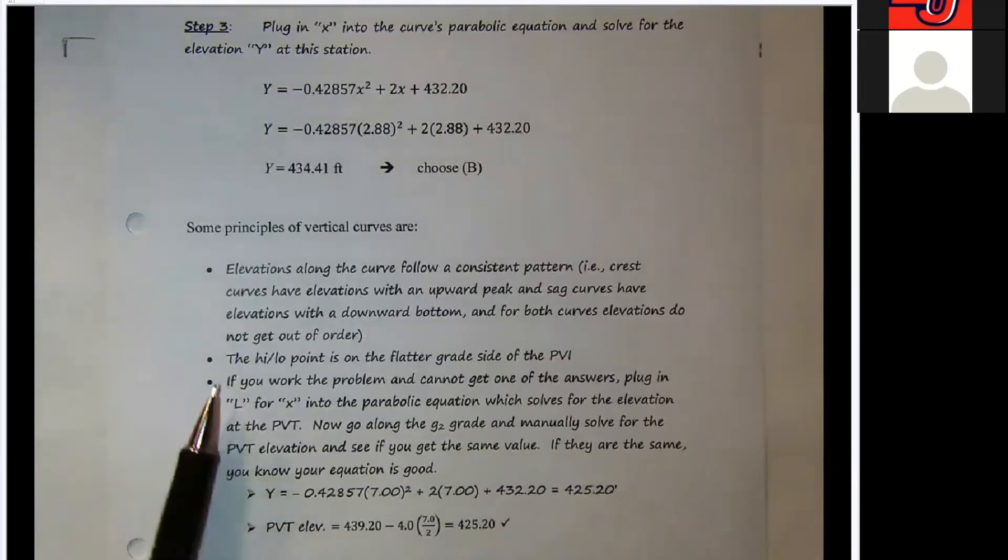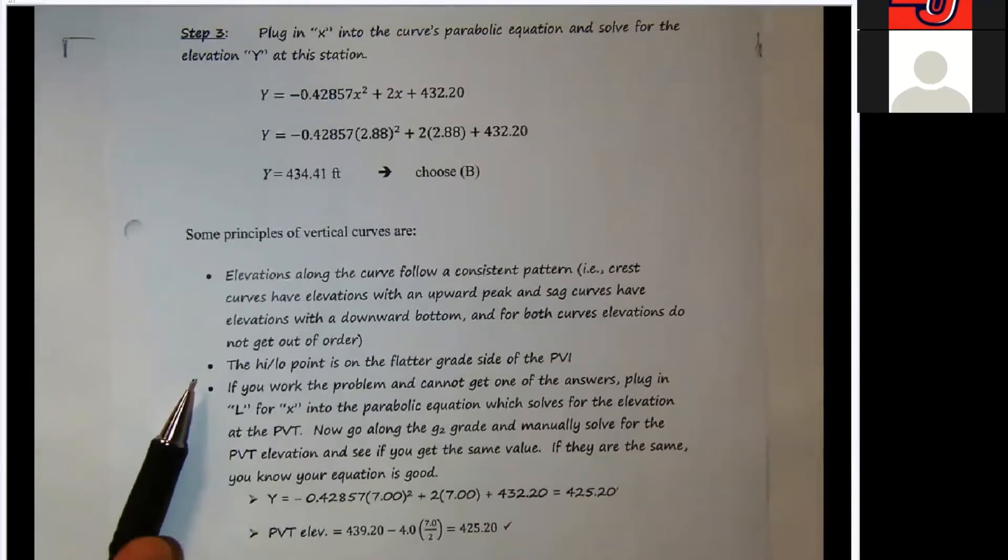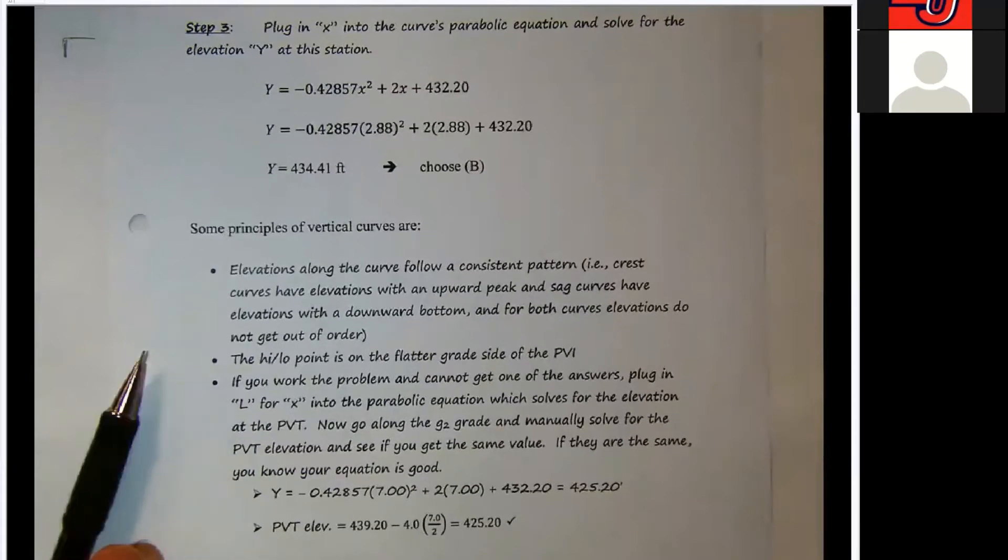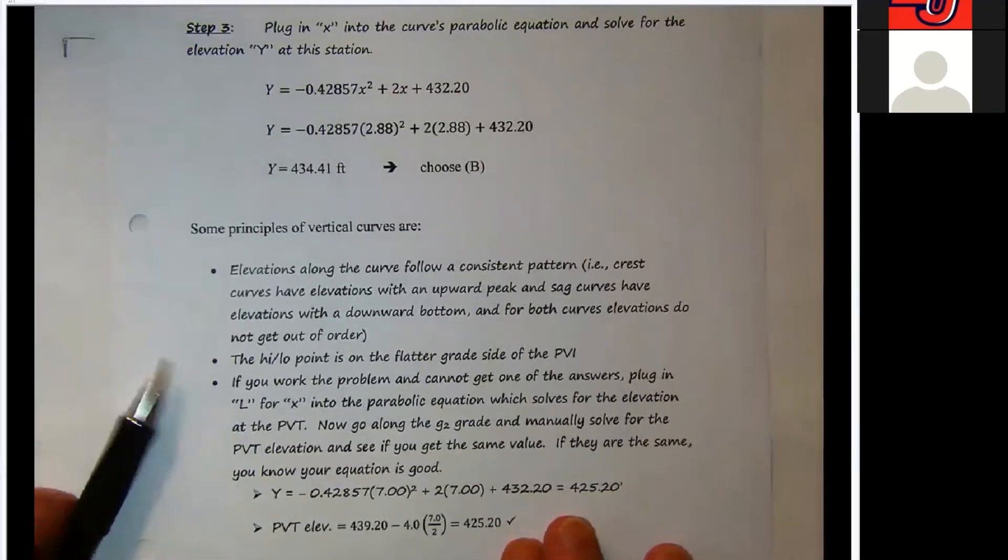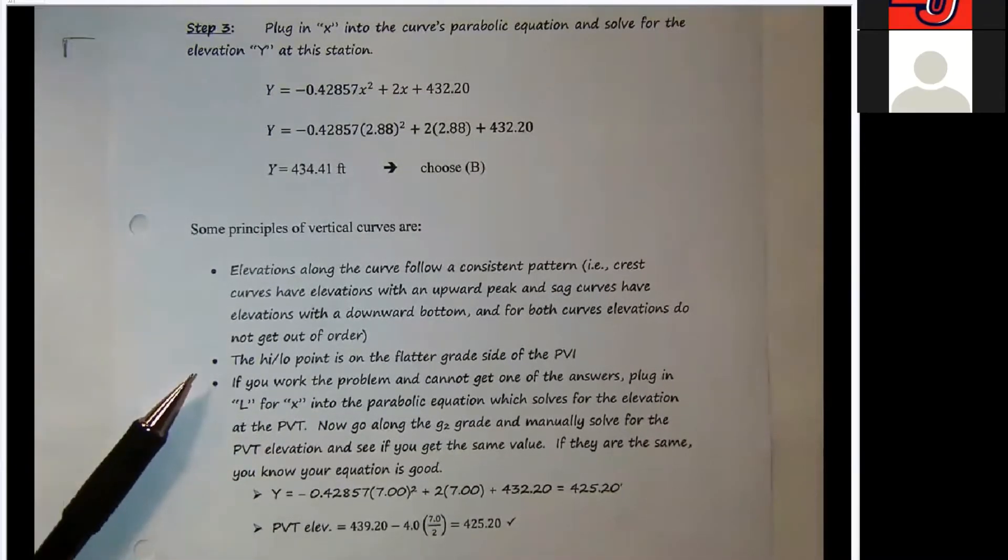This next bullet, the high point or the low point is always on the side of the PVI that has the flatter grade. In our problem, we had a 2% meeting a minus 4%. So the high point of this curve, station-wise, is going to be before or to the left of the PVI.